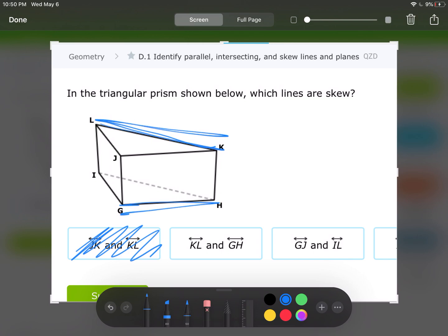KL and GH. Now that looks great. They're not in the same plane and they do not intersect.